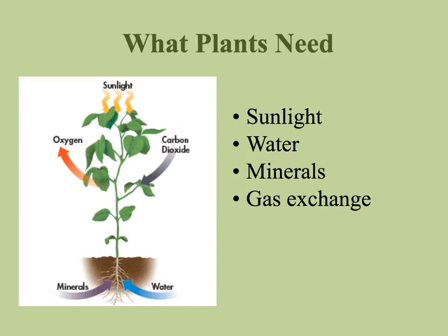Now we're going to talk about the things that plants need in order to grow. Just like we need certain things as animals to maintain life, plants need certain things. Those can be broken down into four categories: sunlight, water, minerals, and gas exchange. We'll talk about each one of those.